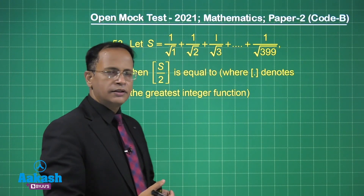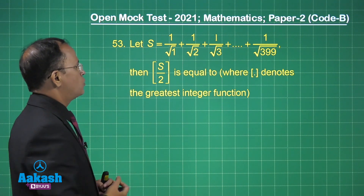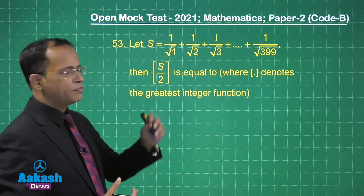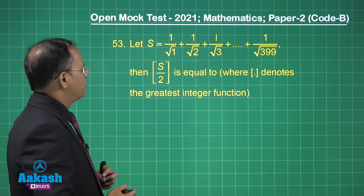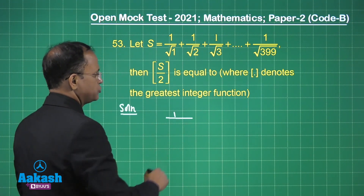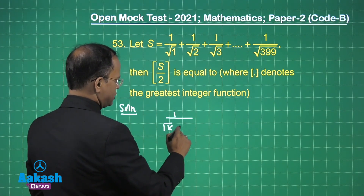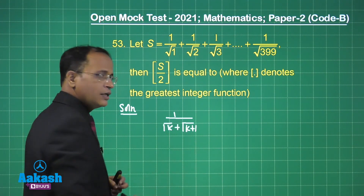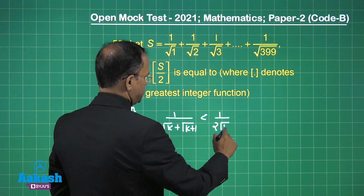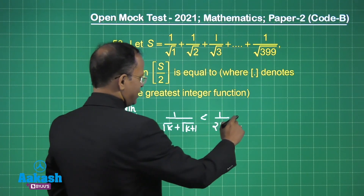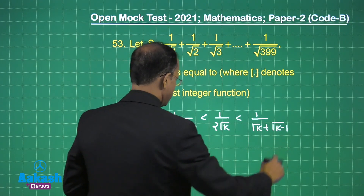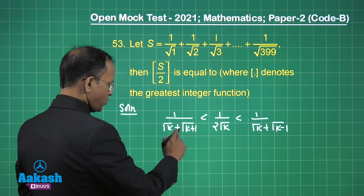The next problem involves a series in terms of roots: S = 1/√1 + 1/√2 + 1/√3 + ... + 1/√399. We have to find the greatest integer part of S/2. We use an inequality: 1/(√k + √(k+1)) < 1/(2√k) < 1/(√k + √(k-1)).